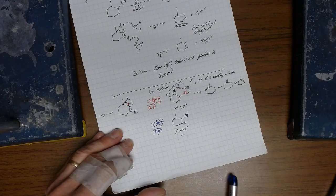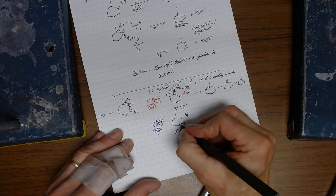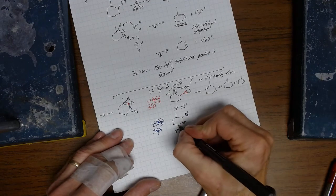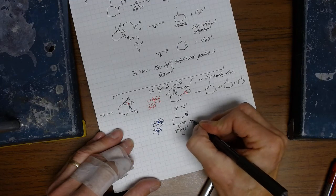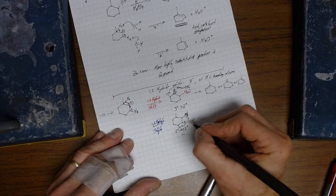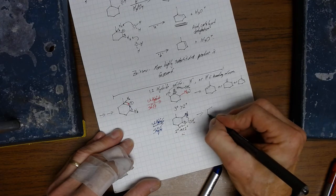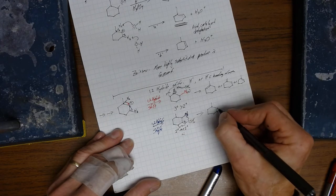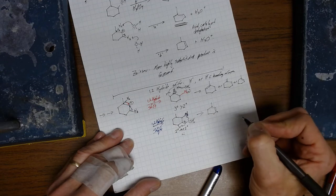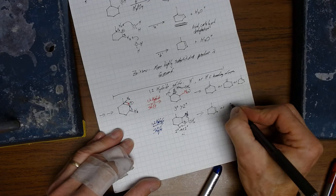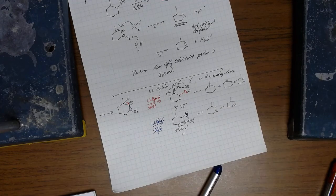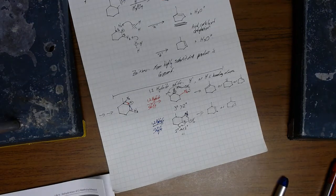Likewise, if we were to cause a deprotonation here, so we could pull off, H2O could come in here, or here. And, what that'll do is produce a double bond that looks like this, or an alkene that looks like that. So, those are the various possibilities.